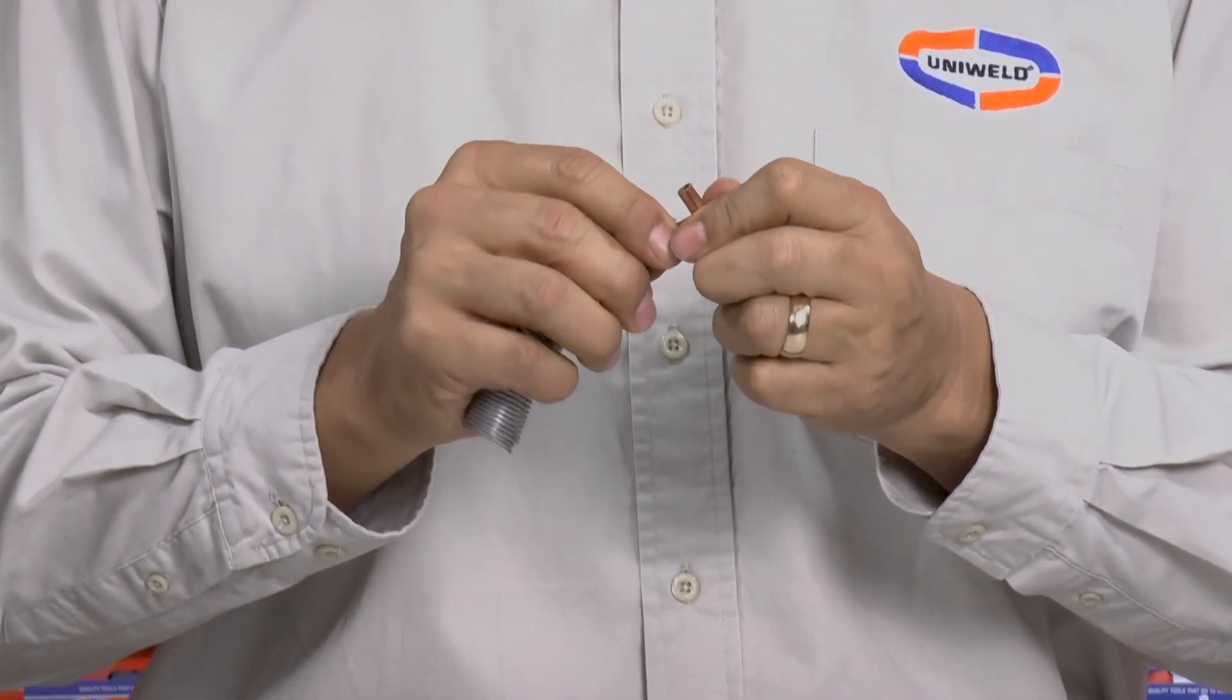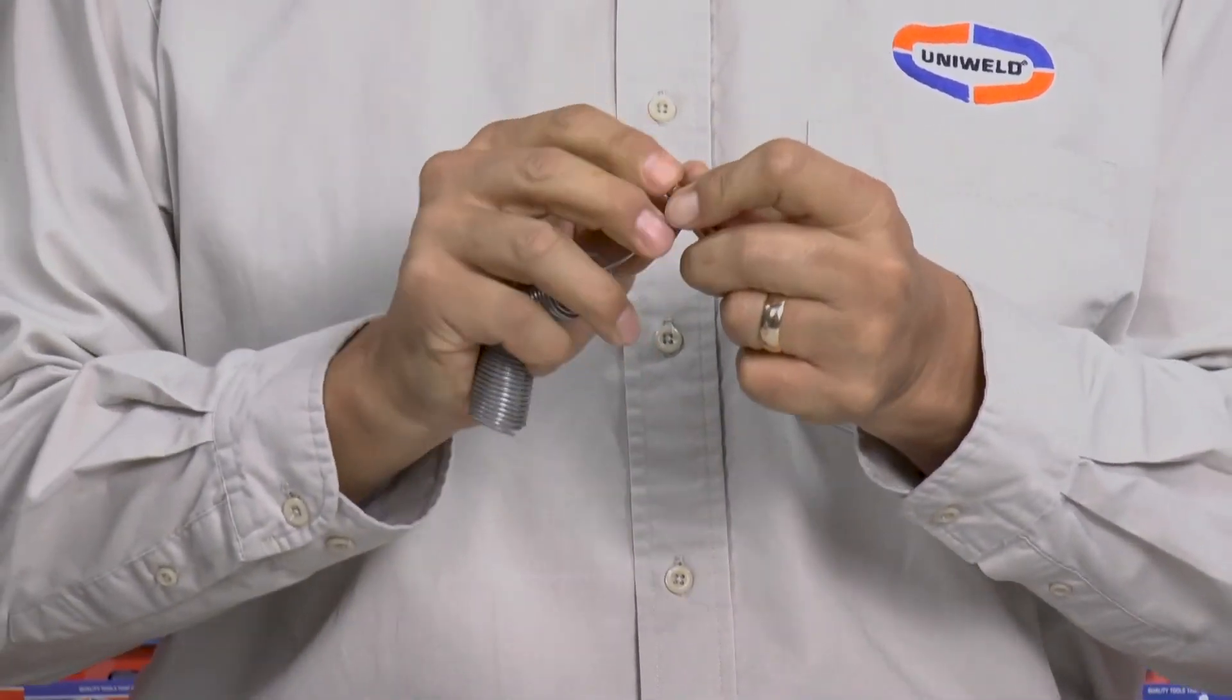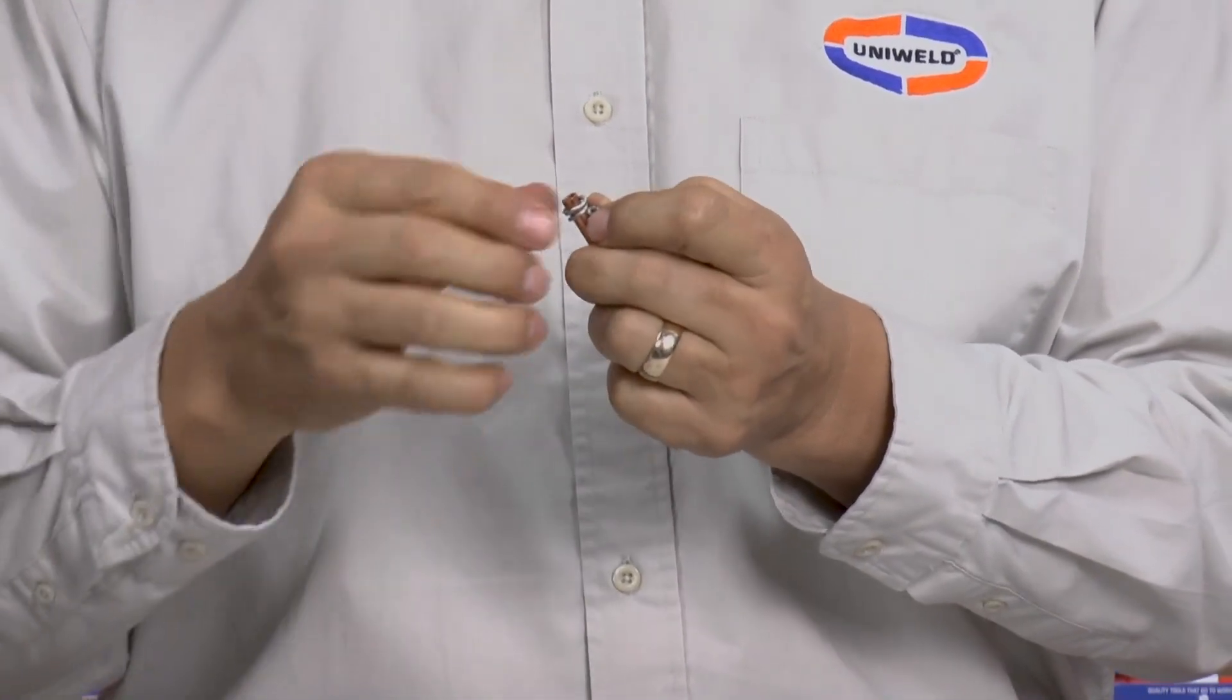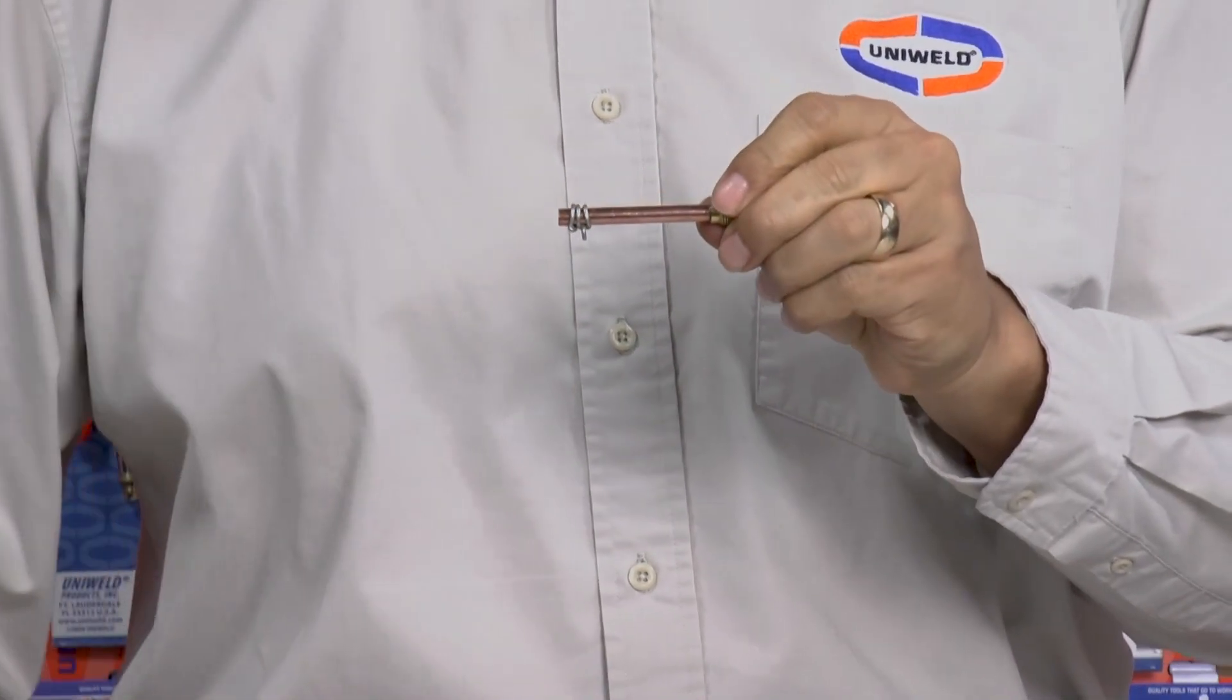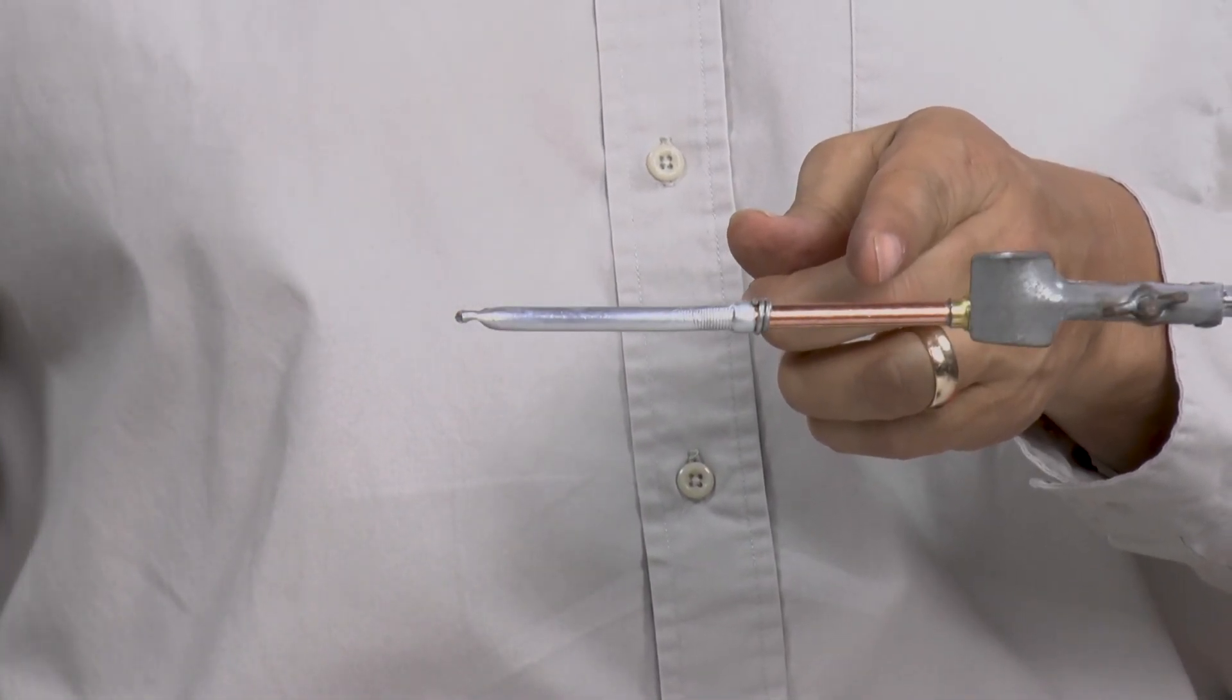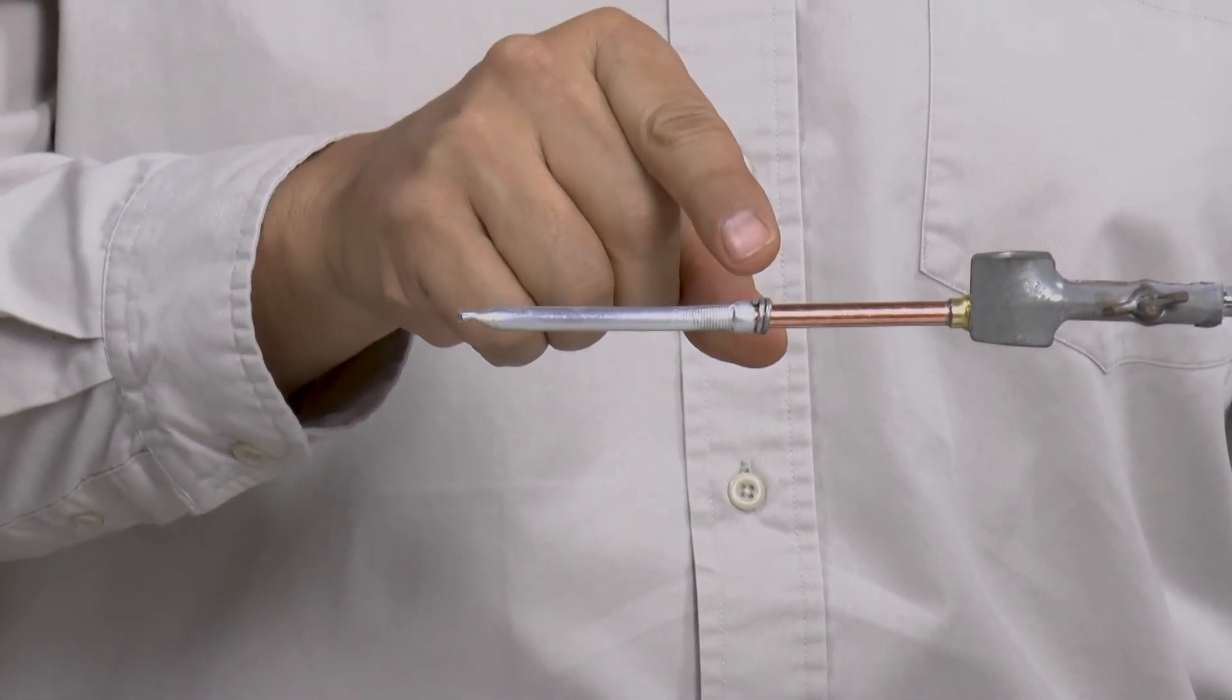We're going to use a copper access valve and with UniWeld's Uni4300 soft solder wire, form an O-ring around the copper tube. We then join this to the aluminum tube and prepare to soft solder the two tubes together. Here you see the copper access valve, the aluminum tube, and the pre-formed Uni4300 soft solder O-ring.